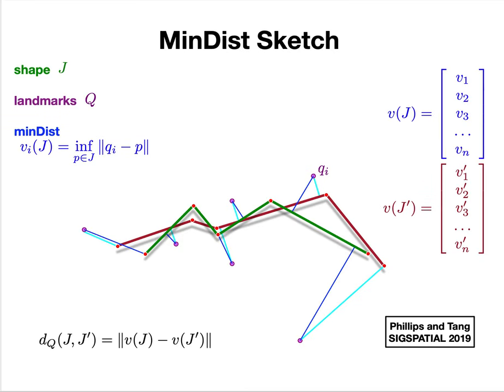If I have a different shape, another piecewise linear curve J', I use the same landmarks where I'm querying this distance MinDist function, and I get a different vector. Given these two shapes, the distance between them for a fixed set Q is just the Euclidean distance between these vectorized representations, these sketches.